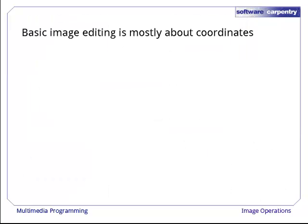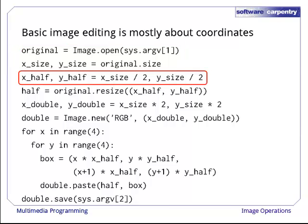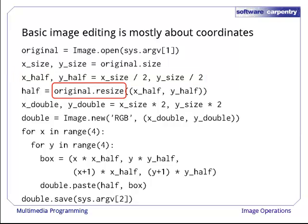Much of the time we want to rescale an image or work with a subsection of it. The hardest part of doing this is often figuring out the coordinates of the regions we're operating on. This program opens an image and extracts its size, then does some very simple arithmetic to figure out how large an image half that size would be. It then uses the image's resize method to create a new image that is half as tall and half as wide as the original.